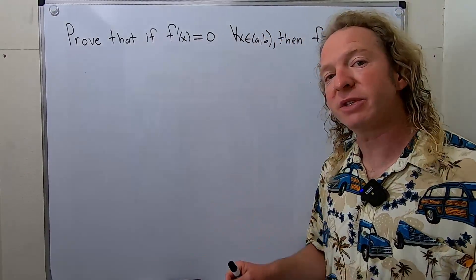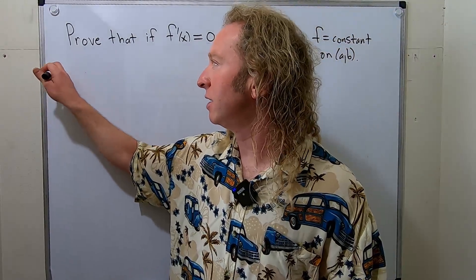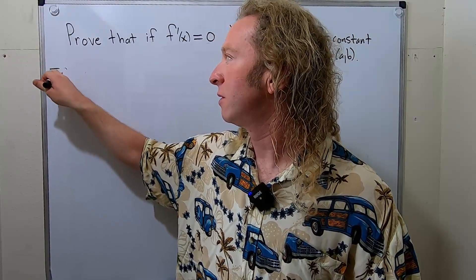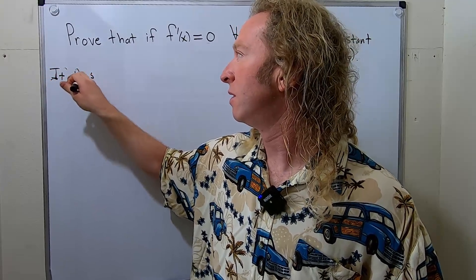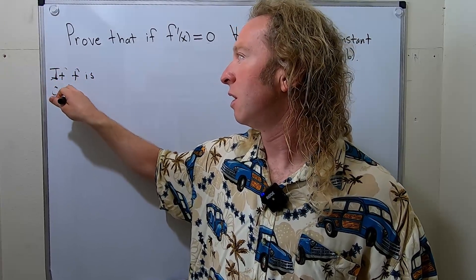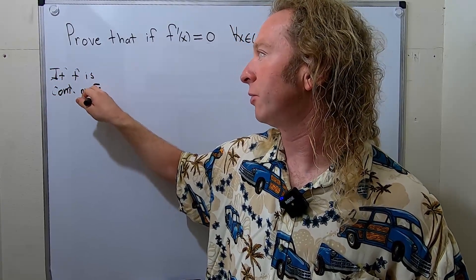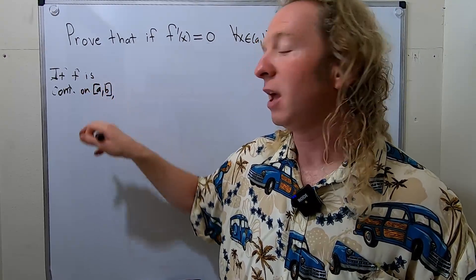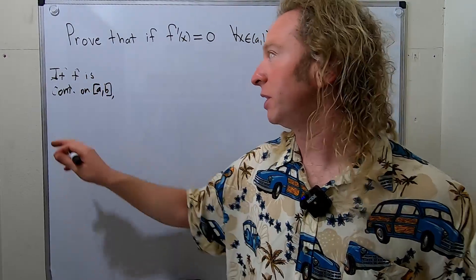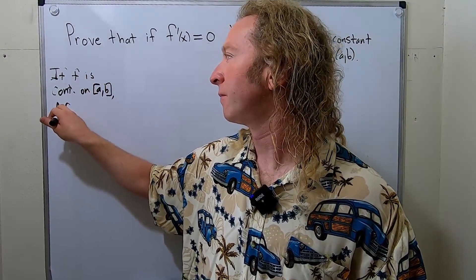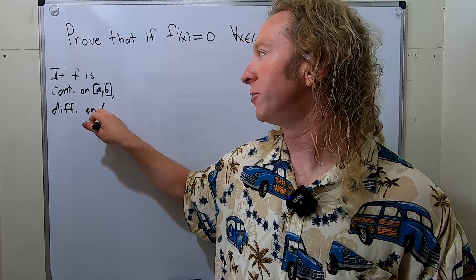So the mean value theorem says if you have a function that is continuous, so if f is continuous on, say, the closed interval [a,b], and then we also have to have differentiability, so differentiable on the open interval (a,b).